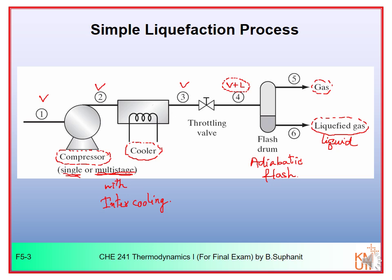For this simple liquefaction system, for every one kilogram of gas fed to the system, you will get less than one kilogram of liquid produced. If at point four the vapor fraction is x, then you have x kilograms of gas and one minus x kilograms of liquid. This simple liquefaction process is not very efficient because you get less liquid than feed.